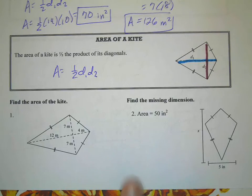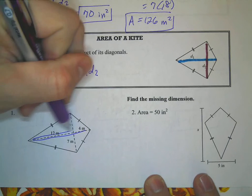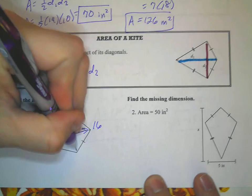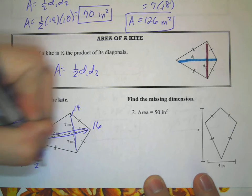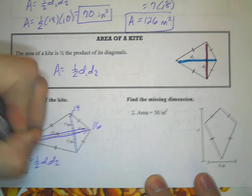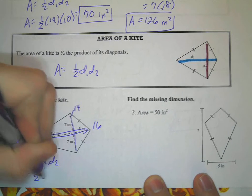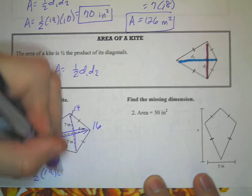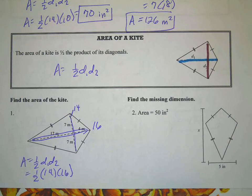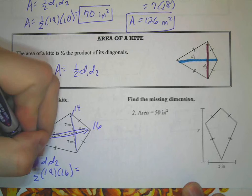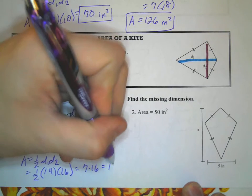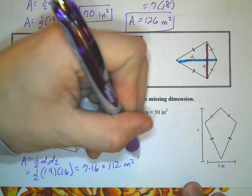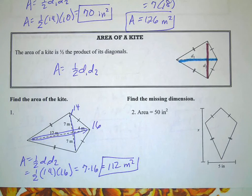Okay. So again here, this diagonal would be 16. This one is 14. So we have 1/2 times 14 times 16. Half of 14 is 7. 7 times 16 is 112. So we get the area is 112 square meters for that one.